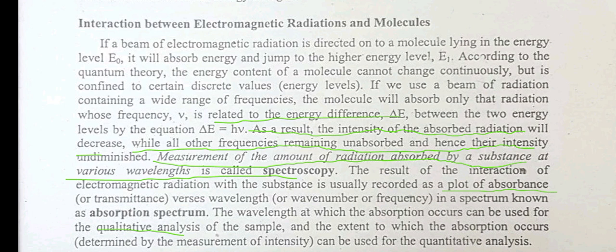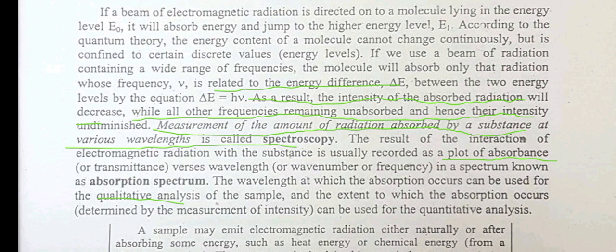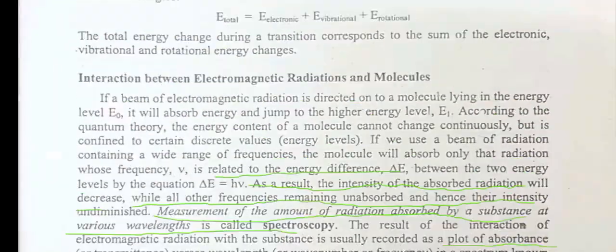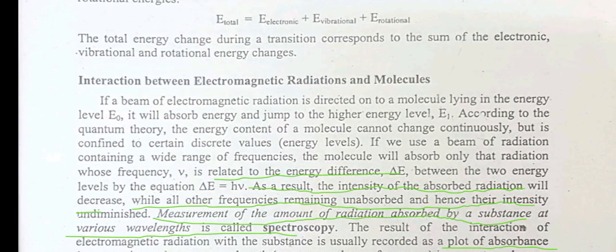As a result, the intensity of the absorbed radiation will decrease, while all other frequencies remain unabsorbed and their intensity undiminished. Measurement of the amount of radiation absorbed by a substance at various wavelengths is called spectroscopy, and this gives the absorption spectrum. Thanks for watching.